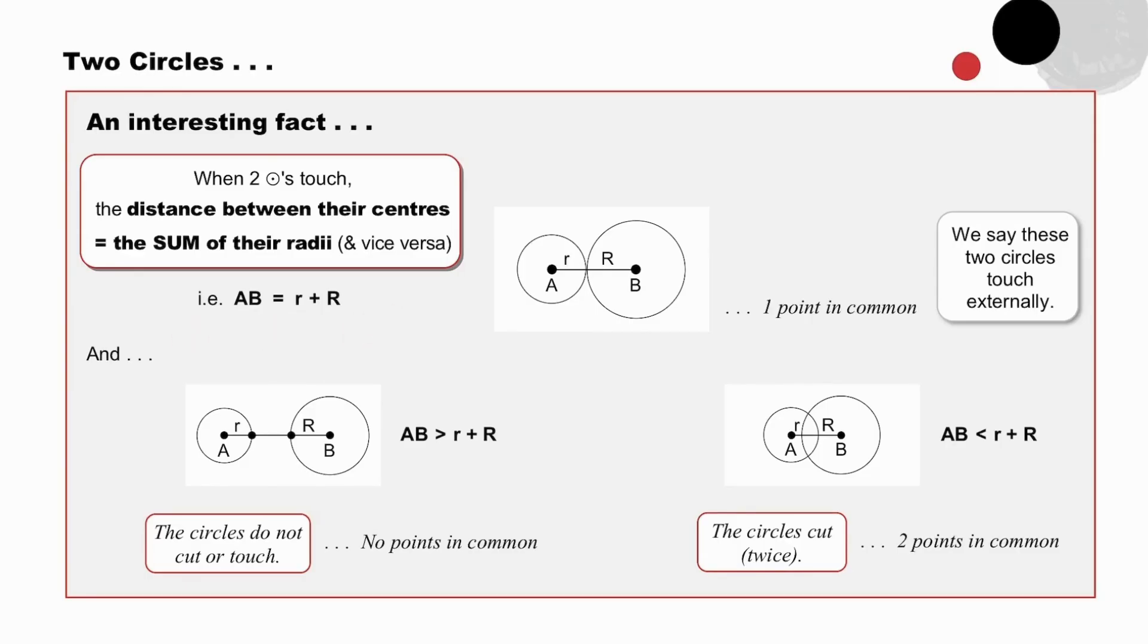And if the circles do not cut or touch, the distance between their centers is greater than the sum of their radii. If the circles cut twice, as in this case, the distance between their centers is less than the sum of their radii. We have one point in common here. We have two points in common here. And we have no points in common in this case. Simple, but fun.